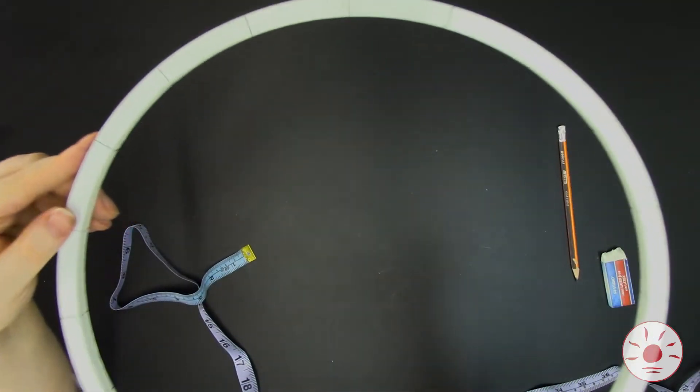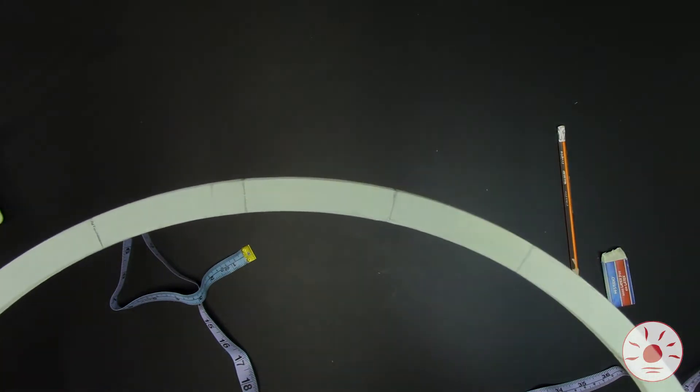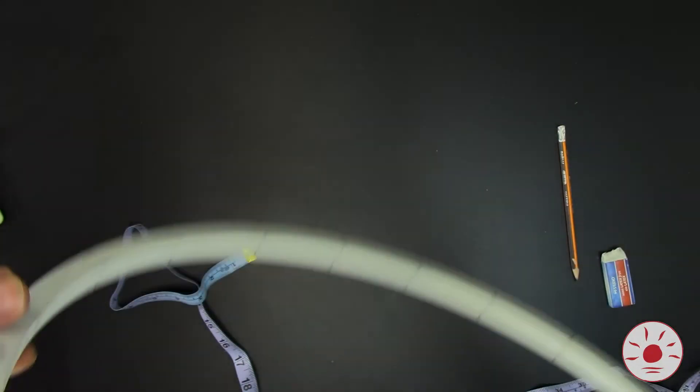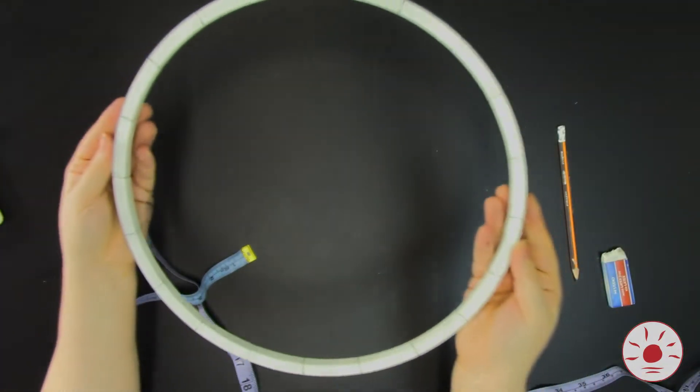So as you can see, our hoop is all done. We've got our 20 equal segments and we are now ready to move on to the next step.